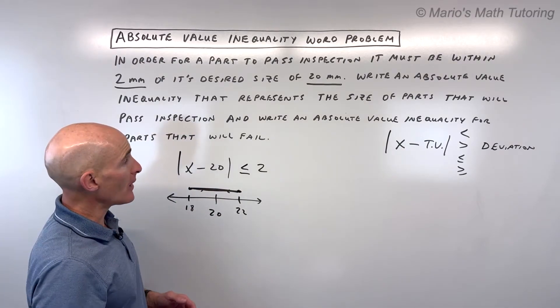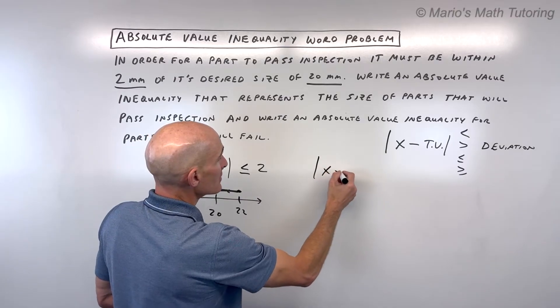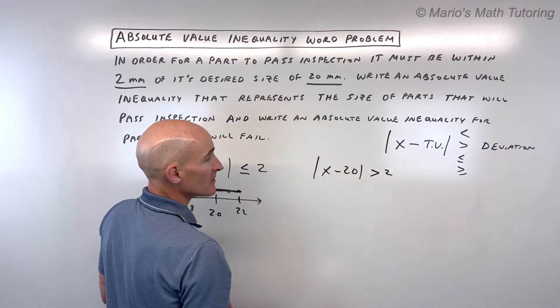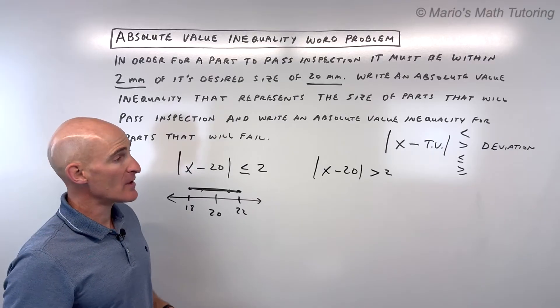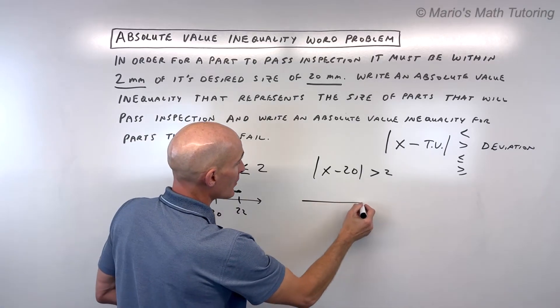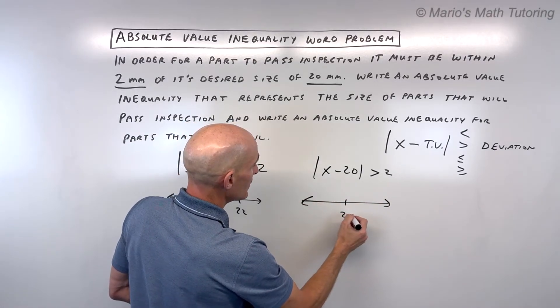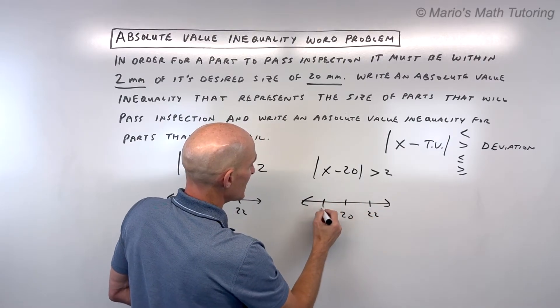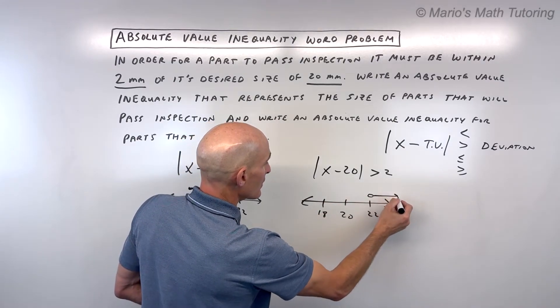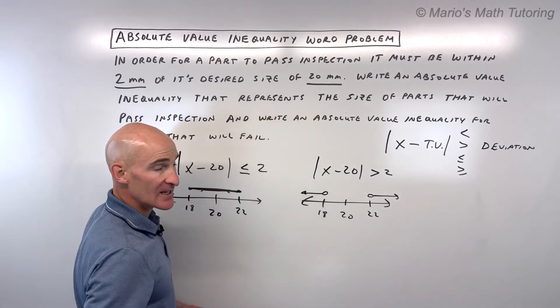Now, the parts that are going to fail are going to be greater than 2 millimeters away. What I mean by that is further away. If you graph this, here's 20, here's 22, here's 18—it has to be greater than 22 or less than 18.